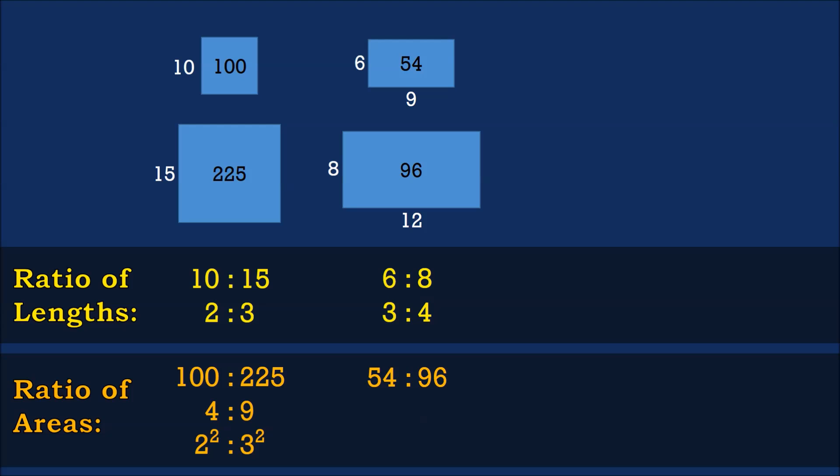Now the ratio of the areas: 54 is to 96. Simplifying gives 9 is to 16, which we can express as perfect squares: 3 squared is to 4 squared. Is this another coincidence?